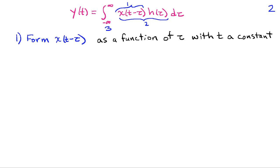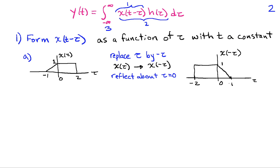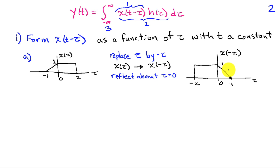We're going to form x(t − τ) as a function of τ, treating t as a constant. We'll start off with some x(τ). In our first step, we'll replace τ by −τ, and this generates x(−τ), which is a reflection of the signal about τ equals zero. On the right, I've reflected x(τ) about zero.